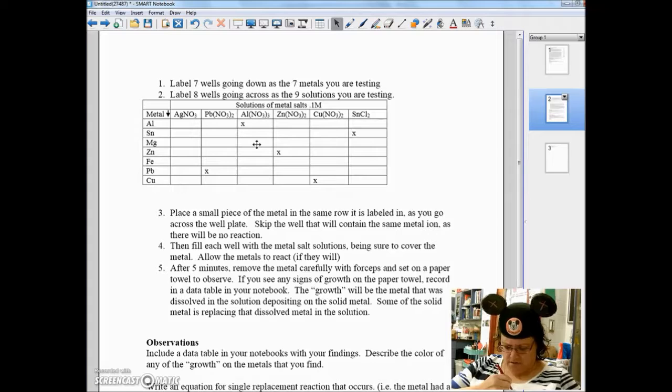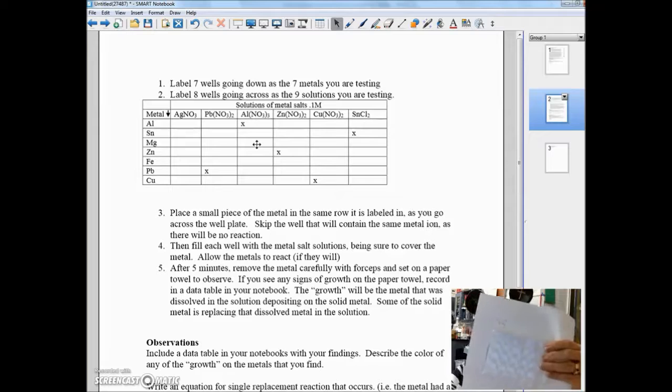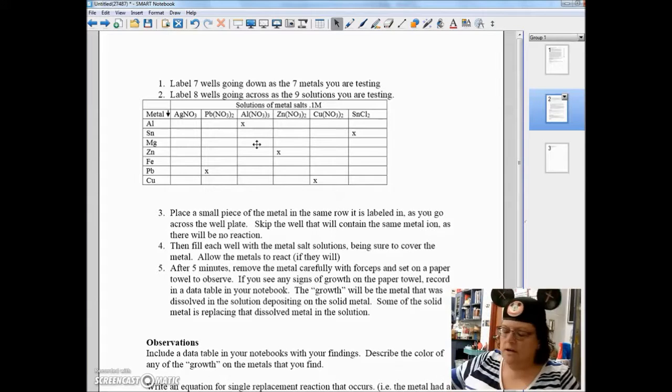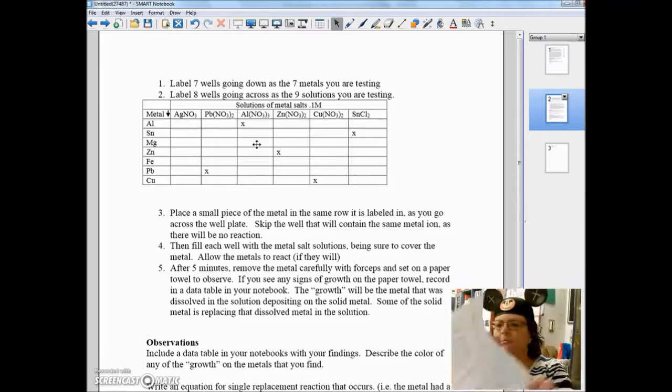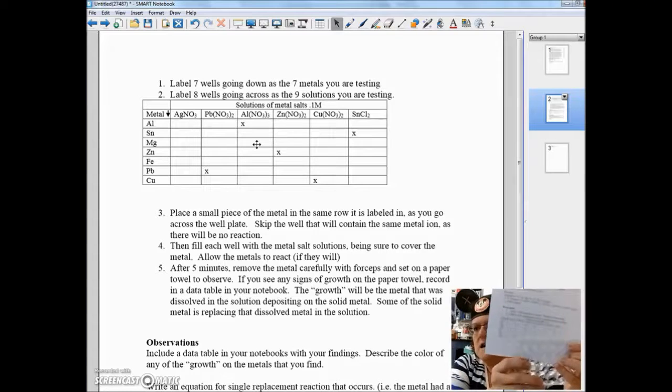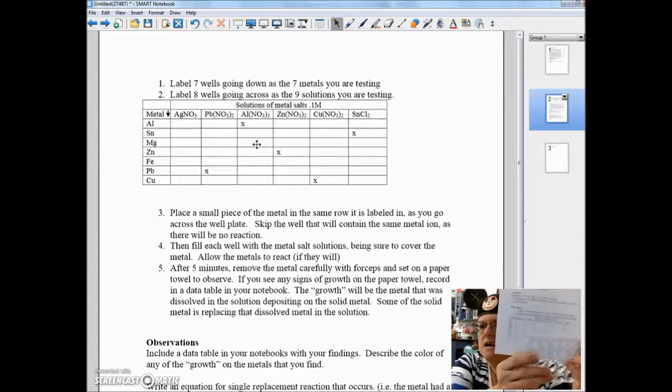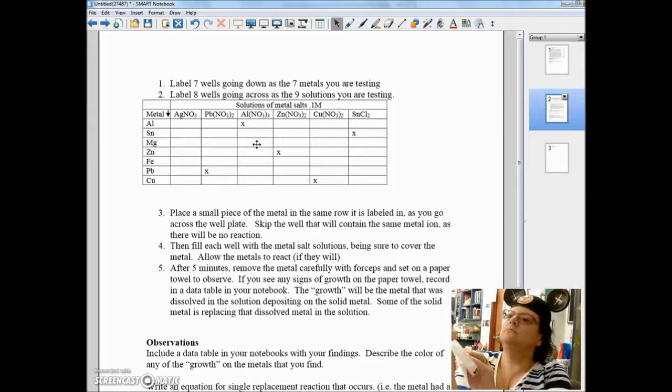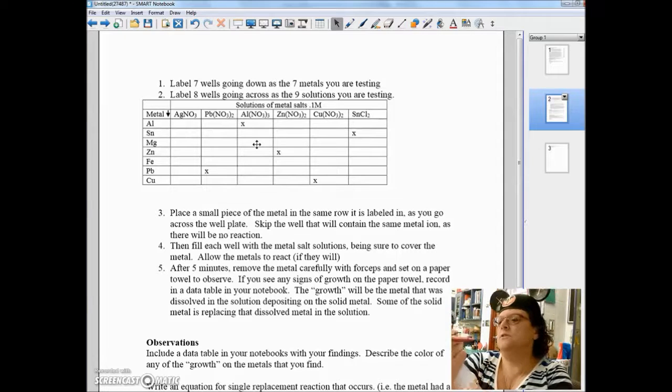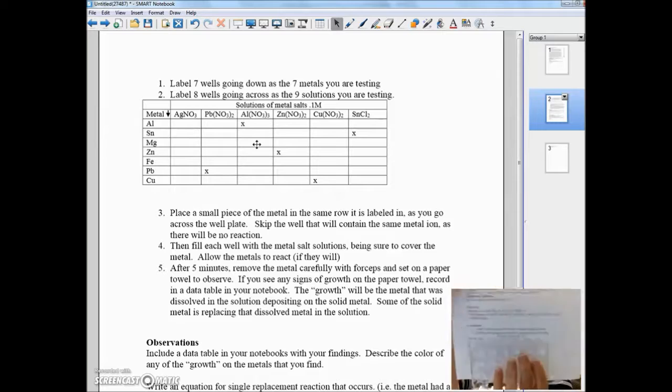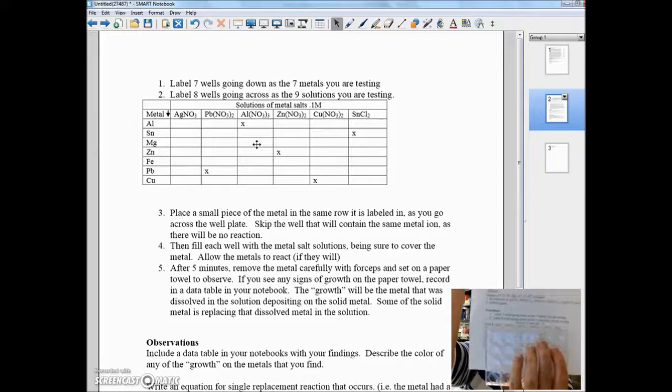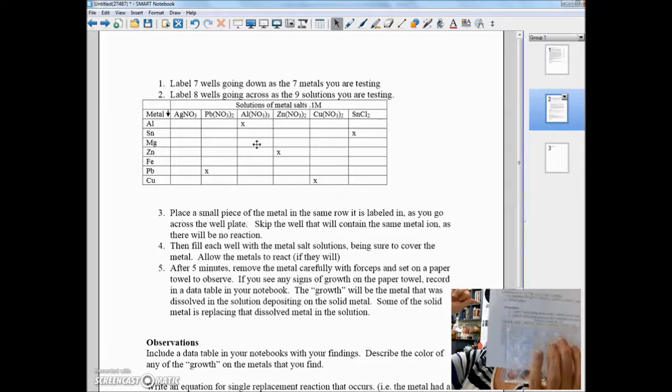If we look at the data table I put in the lab, going across, you're going to have silver nitrate. And I would just write the cation. I wouldn't worry about the nitrate. And then the next one would be lead nitrate. You can just set it right on top of the lab sheet. It's the right size.